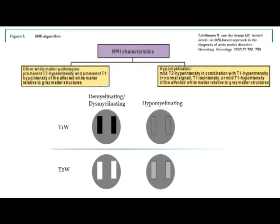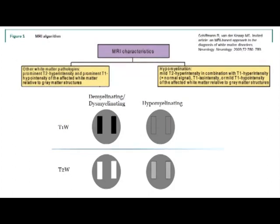In demyelinating disorders, you have prominent T2 hyperintensity — bright signals — and prominent T1 hypointensity, or dark signals, of the affected white matter. Whereas in hypomyelinating disorders, the T2 hyperintensity is milder, and it is in combination with T1 hyperintensity, T1 isointensity, or mild T1 hypointensity.